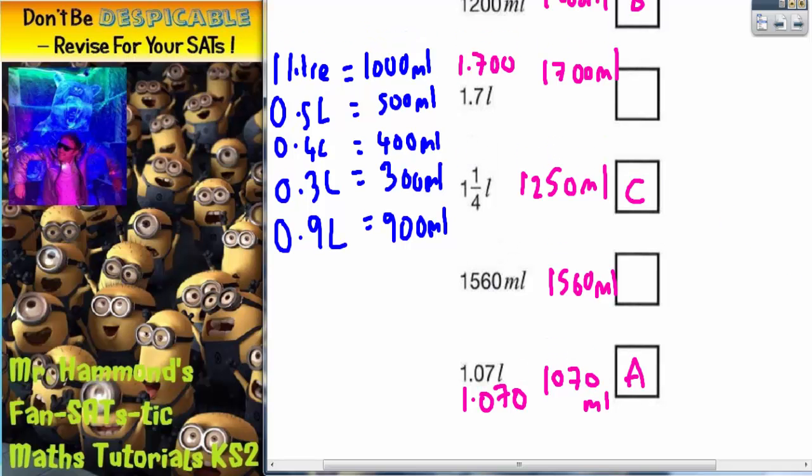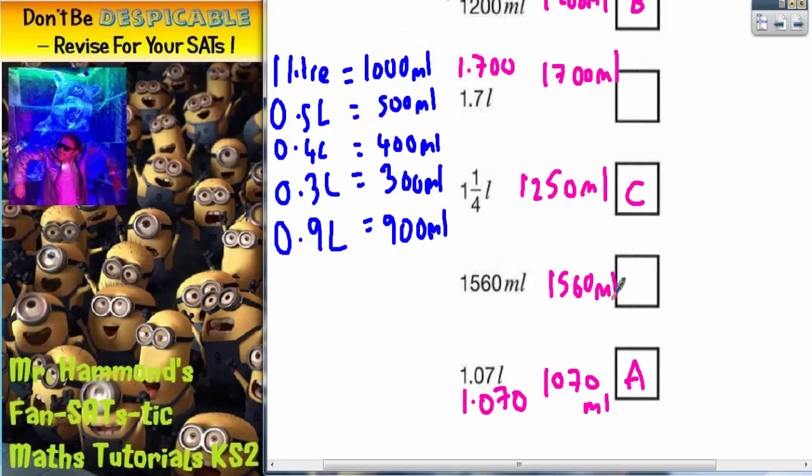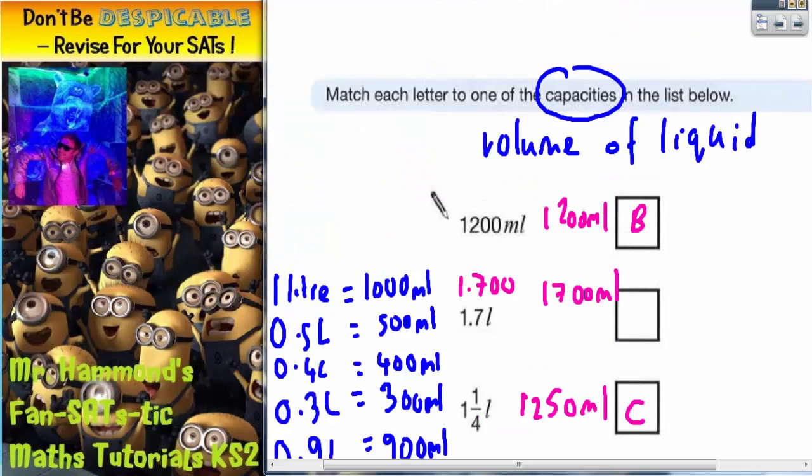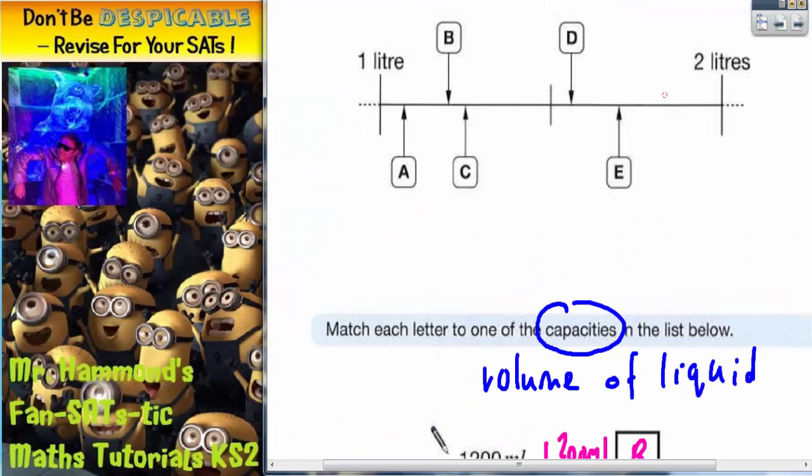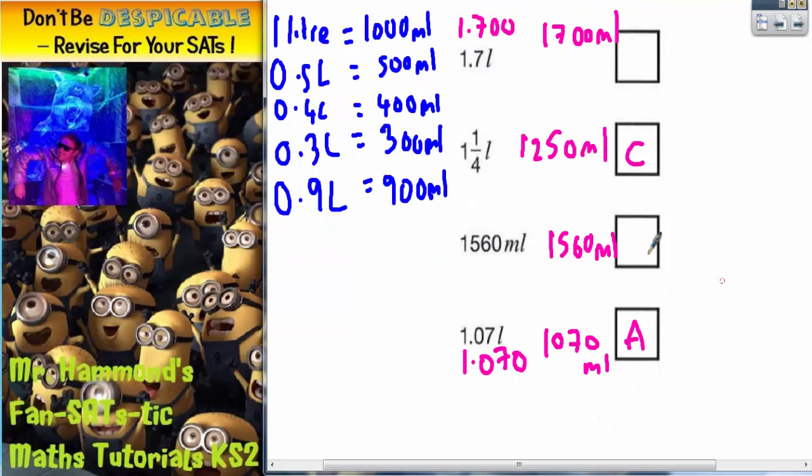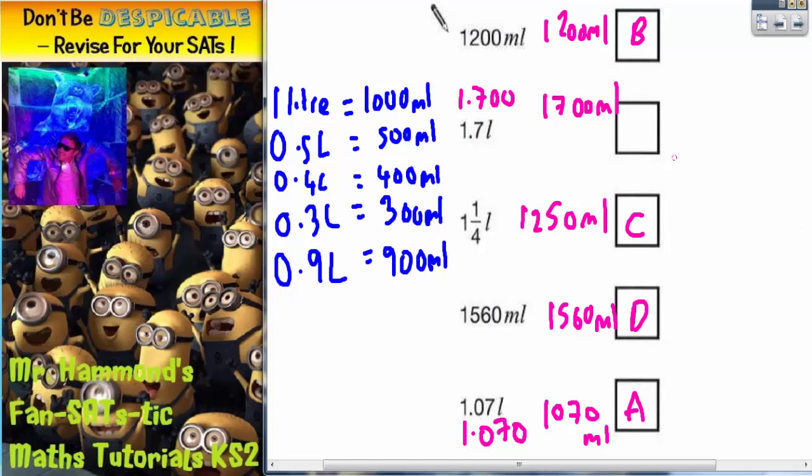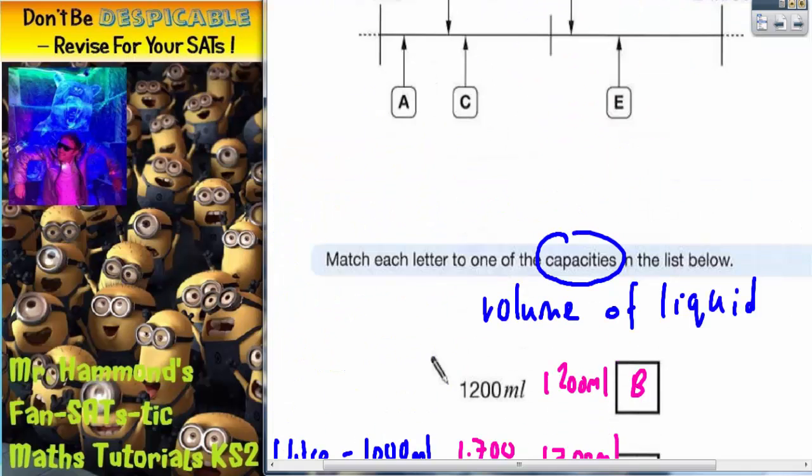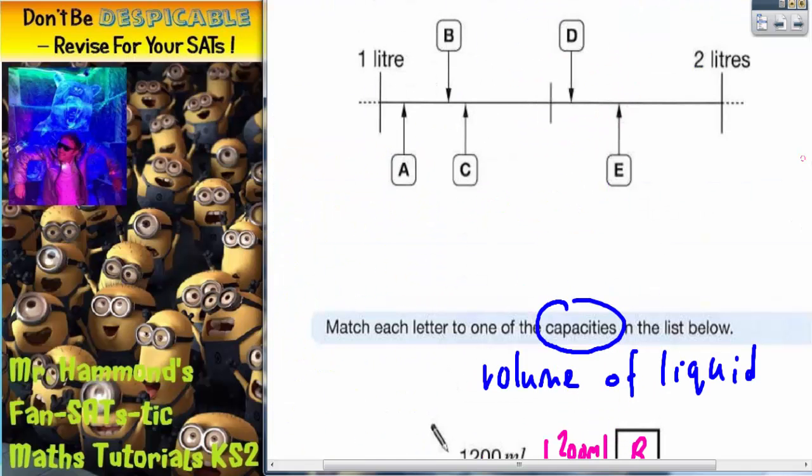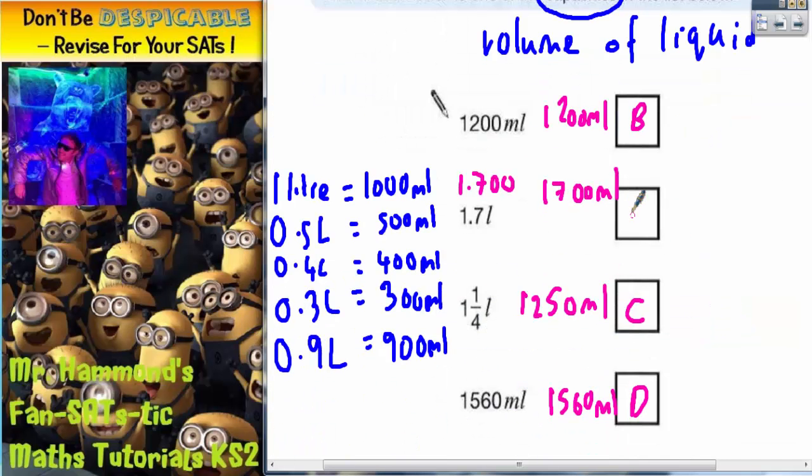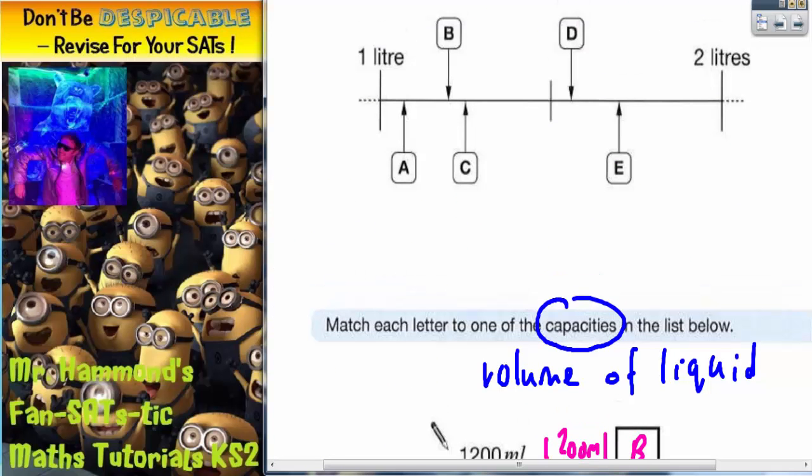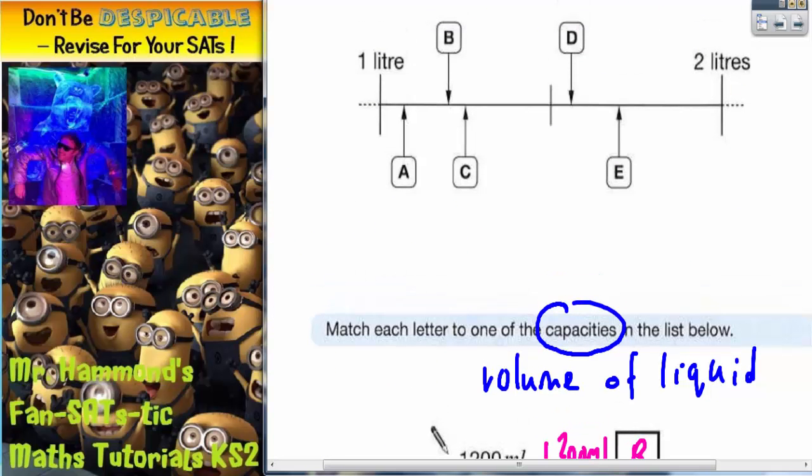Next smallest, we're getting to the two bigger ones now. So the next smallest is 1,560, which is the next letter, which is D. And there's only one letter left, this 1,700, 1.7 litres. That's going to be the biggest one. So that has to be letter E. There we have, we've done it.